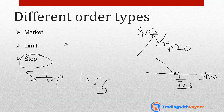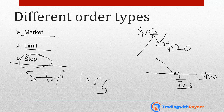So to recap: a market order is when you want to buy right here and right now. A limit order is buying at a price of value — if you don't want to pay the current market price, use a limit order to buy at a cheaper price. A stop order is used by breakout traders — if price trades higher, you buy; if lower, you sell. And a stop loss order helps prevent further risk by getting you out of your trades. I hope you enjoyed this — good luck and good trading!